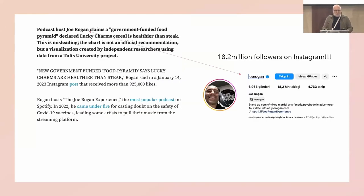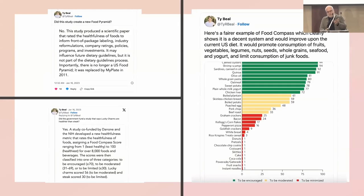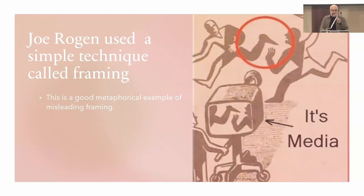The last example is Joe Rogan, with 18.2 million followers, who claims a government-funded food permit declared Lucky Charms cereal is healthier than steak. This is misleading. The chart is not an official recommendation but a visualization created by independent researchers using data from the Tufts University project. Some fact-checking accounts correct this, but they have only 50,000 followers. The fact-checking account says this study produced a scientific paper that rated the healthfulness of foods to inform front-of-package labeling. What Joe Rogan is doing is using a simple technique called framing.